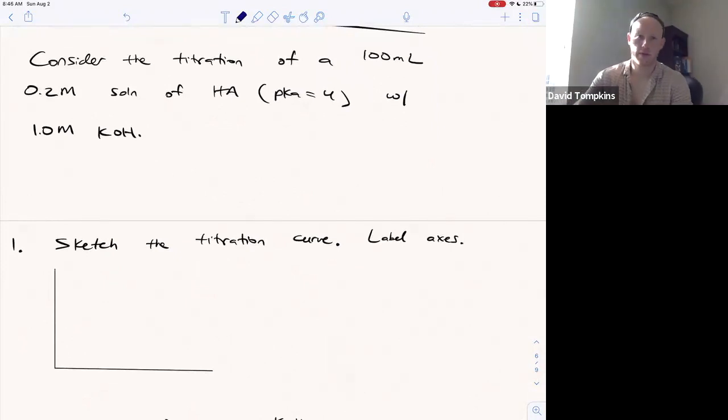Let's consider the titration of 100 mils of 0.2 molar weak acid with pKa of 4 with a 1 molar solution of potassium hydroxide, a strong base.